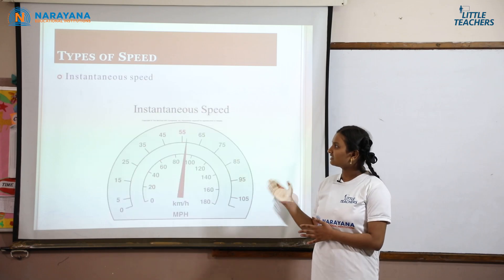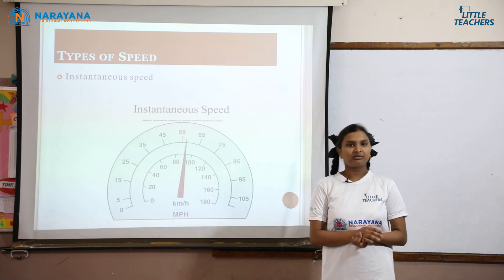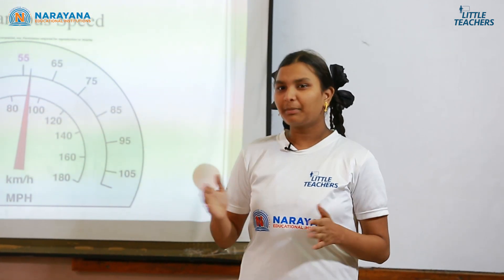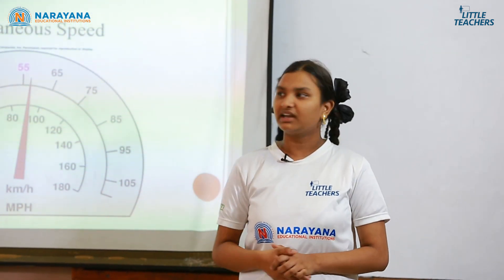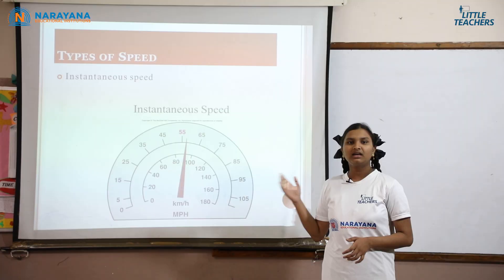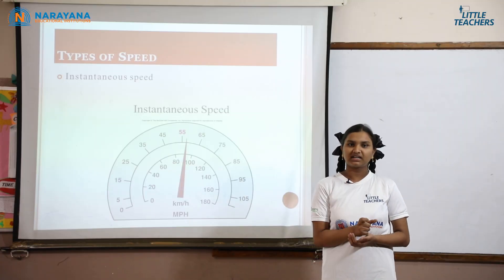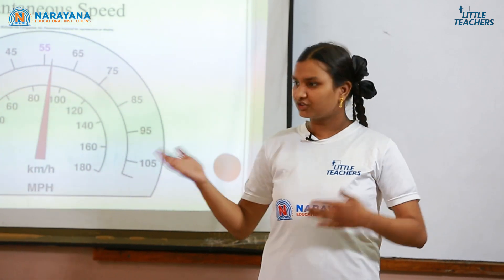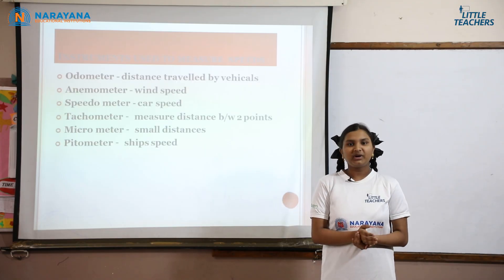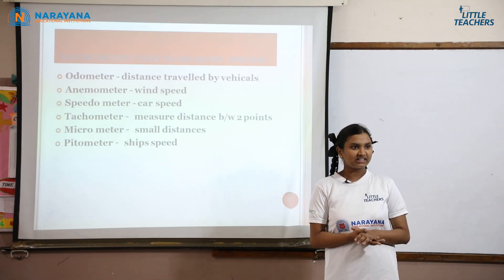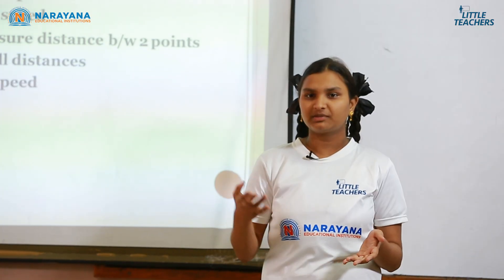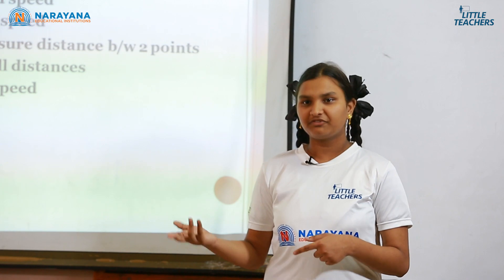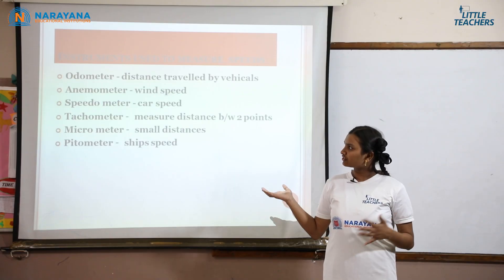Instantaneous speed means the speed of a particle at a particular instant. The best example for instantaneous speed is the speedometer used in cars, because it shows the particular speed of the vehicle at any moment. Some other instruments used to measure speed are: odometer, used to measure speed in vehicles; speedometer, used in cars; and anemometer, used to measure wind speed.